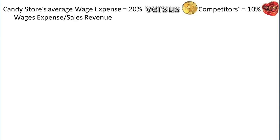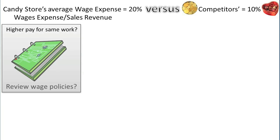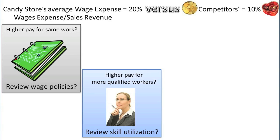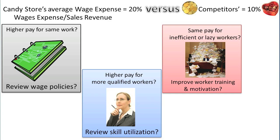Here are some plausible explanations for the difference. One, Candy Store's hourly pay rate for non-manufacturing workers may be higher than that of its competitors for the same or lower quality worker. Management might consider reviewing its salary and wages policy to ensure they are appropriate for each worker classification. Two, Candy Store might be hiring more qualified workers and thus is paying them a higher hourly wage. Management might want to verify that the skills of the higher paid workers are being fully utilized to justify the additional cost. Three, Candy Store's hourly workers might be incredibly inefficient and work twice as many hours to complete the same tasks as its competitors. Management might want to look into improving its worker training or worker motivation strategies to increase efficiency and output.